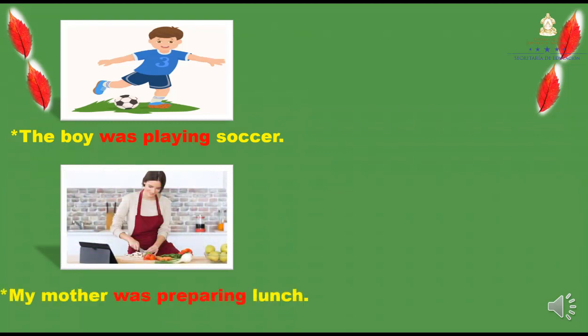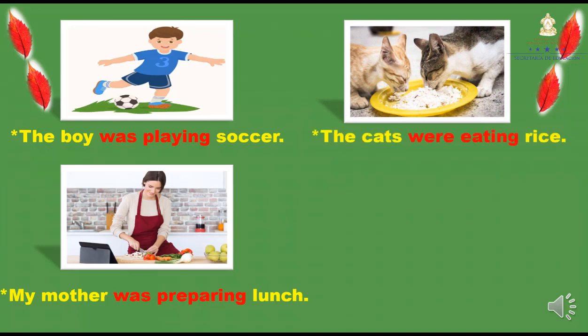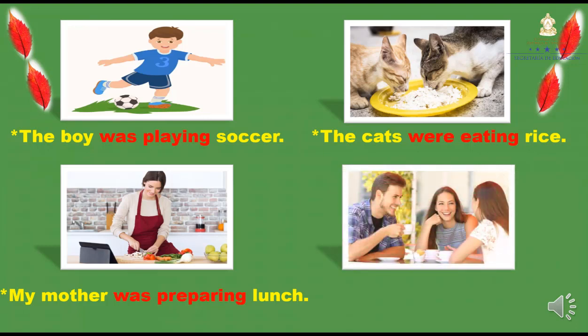Let's see some examples using the past continuous. The boy was playing soccer. El niño estaba jugando pelota. The next: My mother was preparing lunch. Mi mamá estaba preparando almuerzo. The next: The cats were eating rice. Los gatos estaban comiendo arroz. And the last one: They were drinking coffee. Ellos estaban bebiendo café.